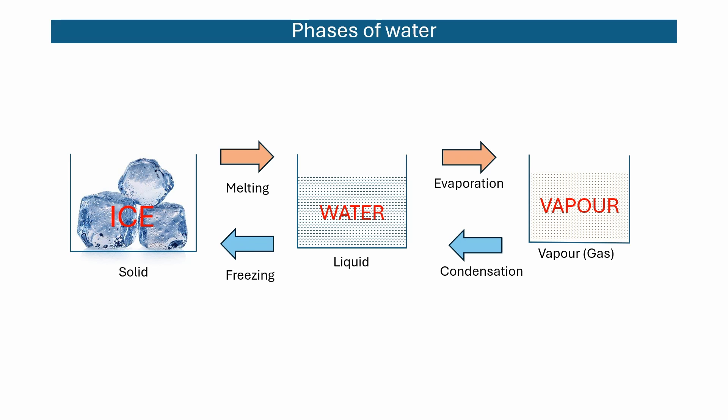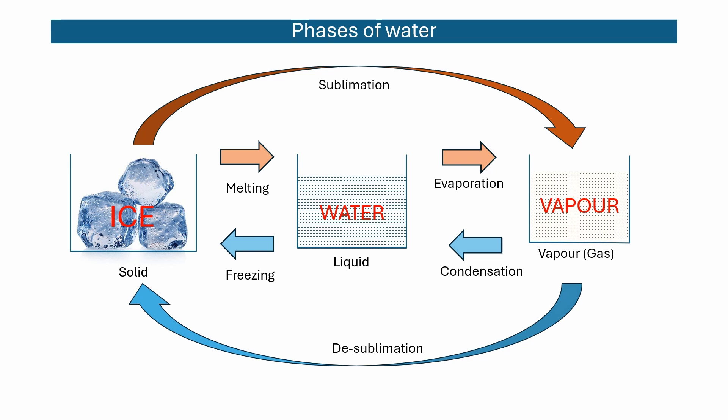If ice changes its phase directly from solid to vapor, the process is called sublimation. The opposite, that is the change of phase directly from vapor to solid, is called de-sublimation. With this preliminary knowledge, now we can proceed to understand the water cycle.